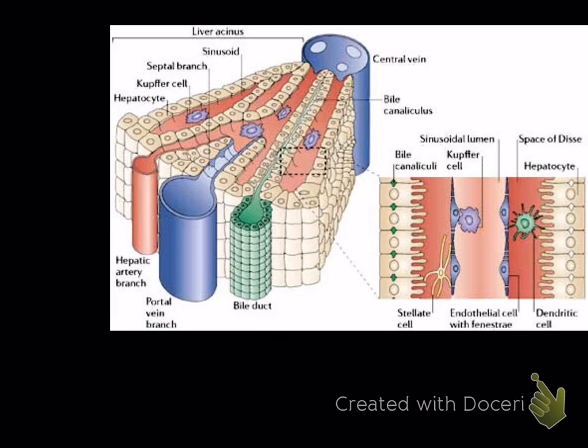Just repeating what I've already said. This periportal area is around the portal vein branch. The portal vein branch is getting blood from the portal vein, which drains the abdomen and the GI tract. The hepatic artery branch, completely oxygenated blood. Those mix. They're mixing here. These hepatocytes are called periportal hepatocytes. That's what's going to get blood first.